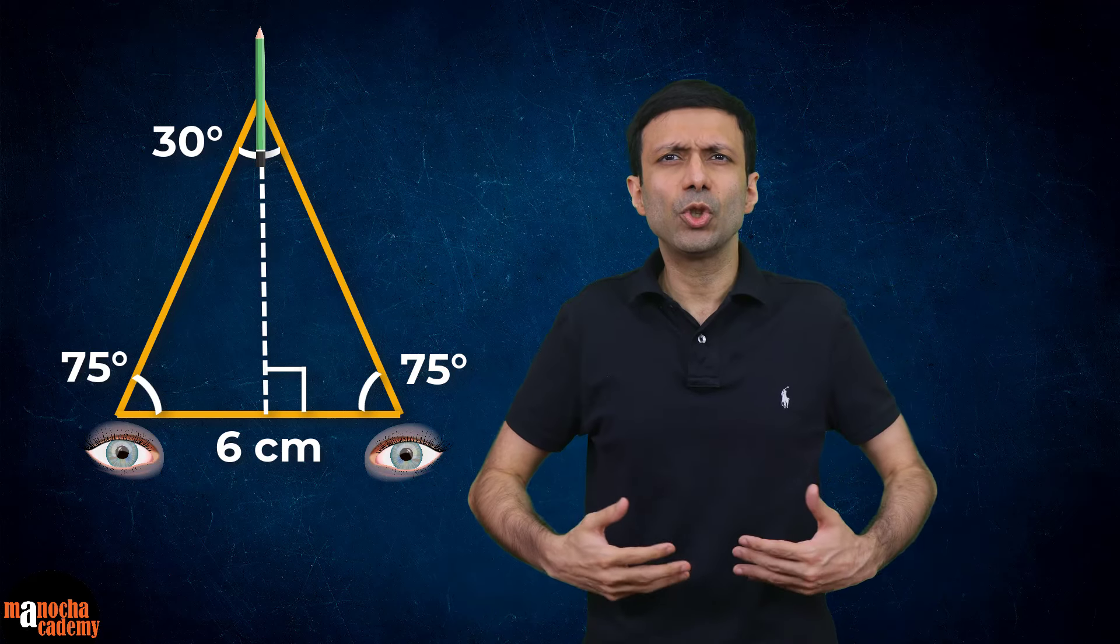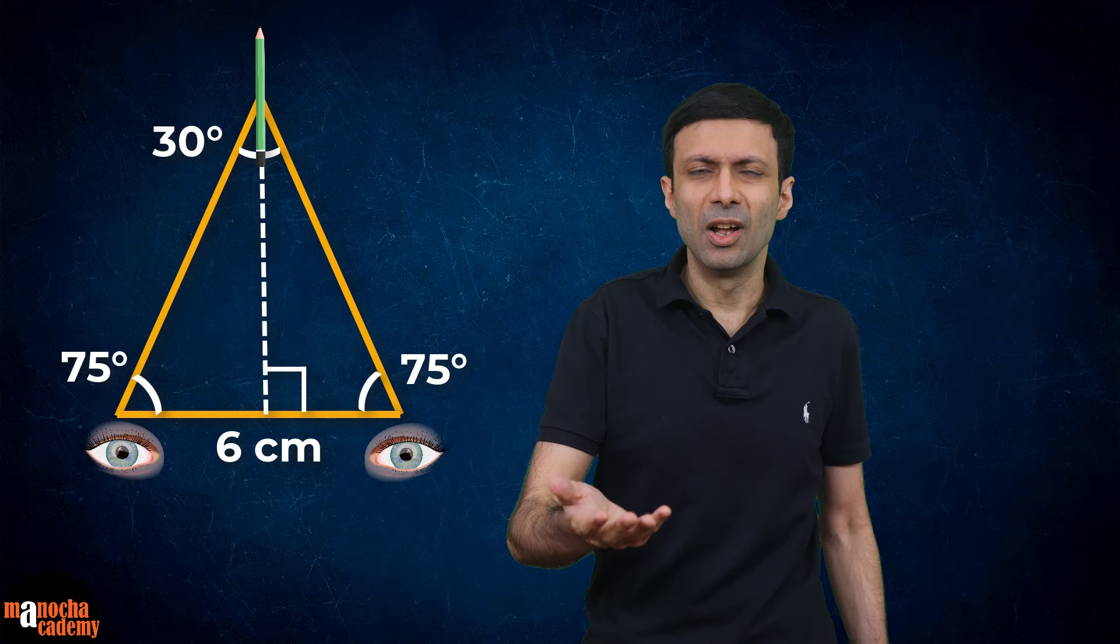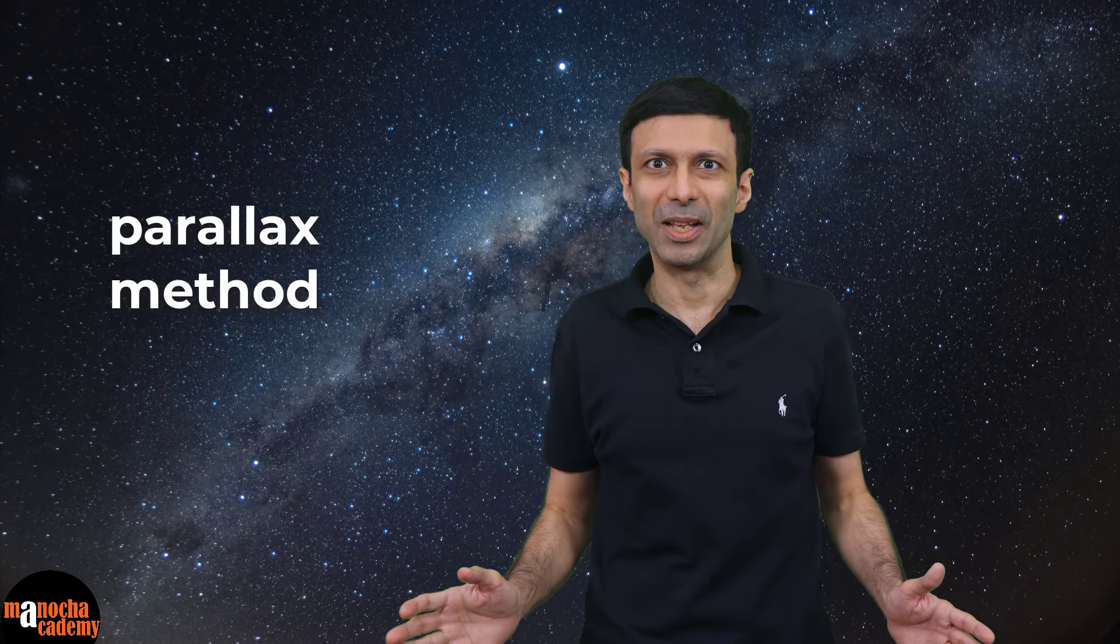You might be thinking why should we use such a complicated way for measuring the distance of a pencil when you could have simply used a measuring tape or a ruler. Here you can use a measuring tape or ruler, but you can't do that for measuring large distances like the distance of planets and stars. There you need to use this indirect method of measuring distance and it's called the parallax method.